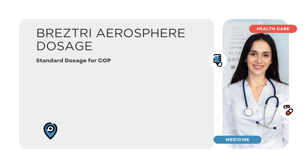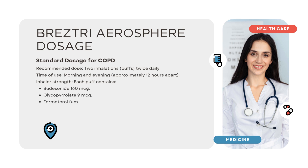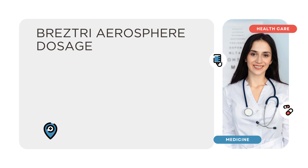Breztri Aerosphere dosage. Standard dosage for COPD — recommended dose: 2 inhalations twice daily, morning and evening. Each puff contains: Budesonide 160 micrograms, Glycopyrrolate 9 micrograms, and Formoterol fumarate 4.8 micrograms.